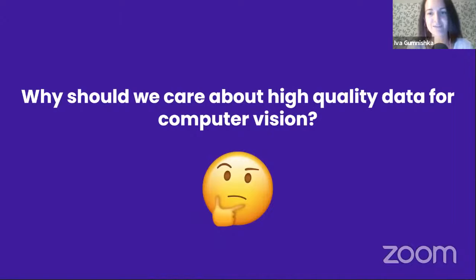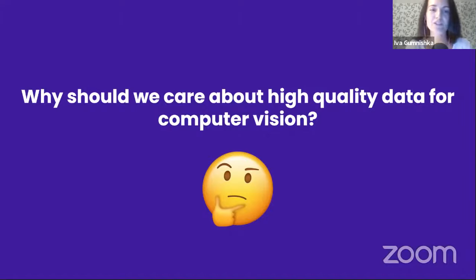In terms of high quality data for computer vision, the question is why should we care. It's kind of natural to assume that we need good data in order to train good models — it's already proverbial that it's garbage in, garbage out. But it's very important to transmit that we do not only care about good data and good models in terms of accuracy and efficiency of the AI system, or how much cost savings it's going to bring us. We also need to consider the wider societal impact of the AI that we're building, and the fact that because it produces decisions at scale, it actually has the capability to affect people at scale.